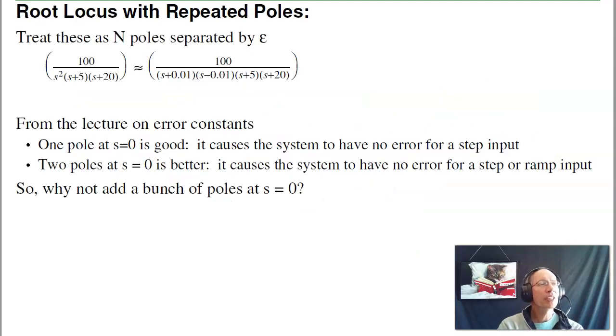In our last lecture we drew the root locus for a system where the poles were not repeated. If you have repeated poles, one way to think about it is take the repeated poles and split them up so they are no longer repeated. Split them up, say plus or minus epsilon. Then you no longer have repeated poles and you can draw the root locus.